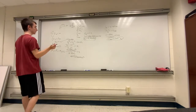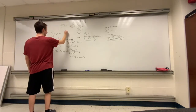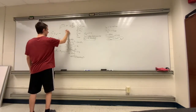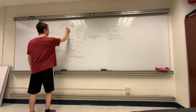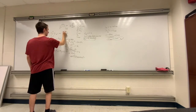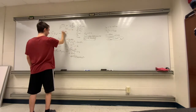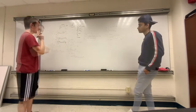We need a free body diagram — that's just an interaction diagram — so we have our dot with a normal force, force of gravity, and force of kinetic friction. Since motion is in this direction, the kinetic friction opposes it and slows it down.